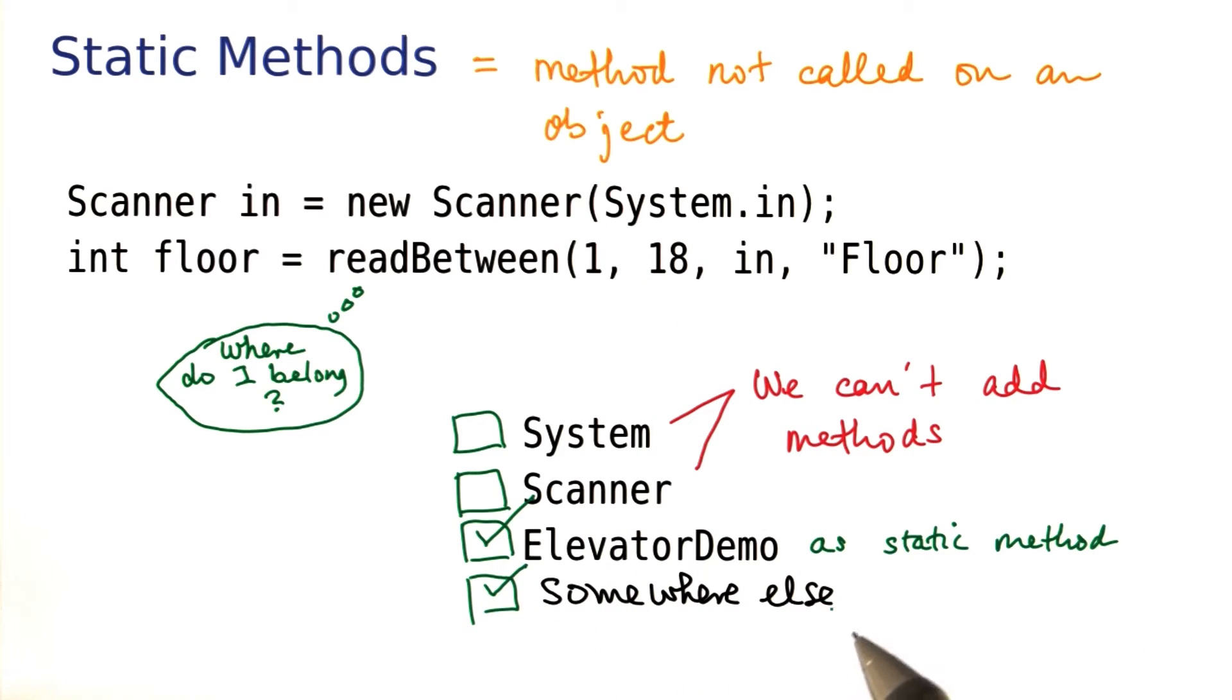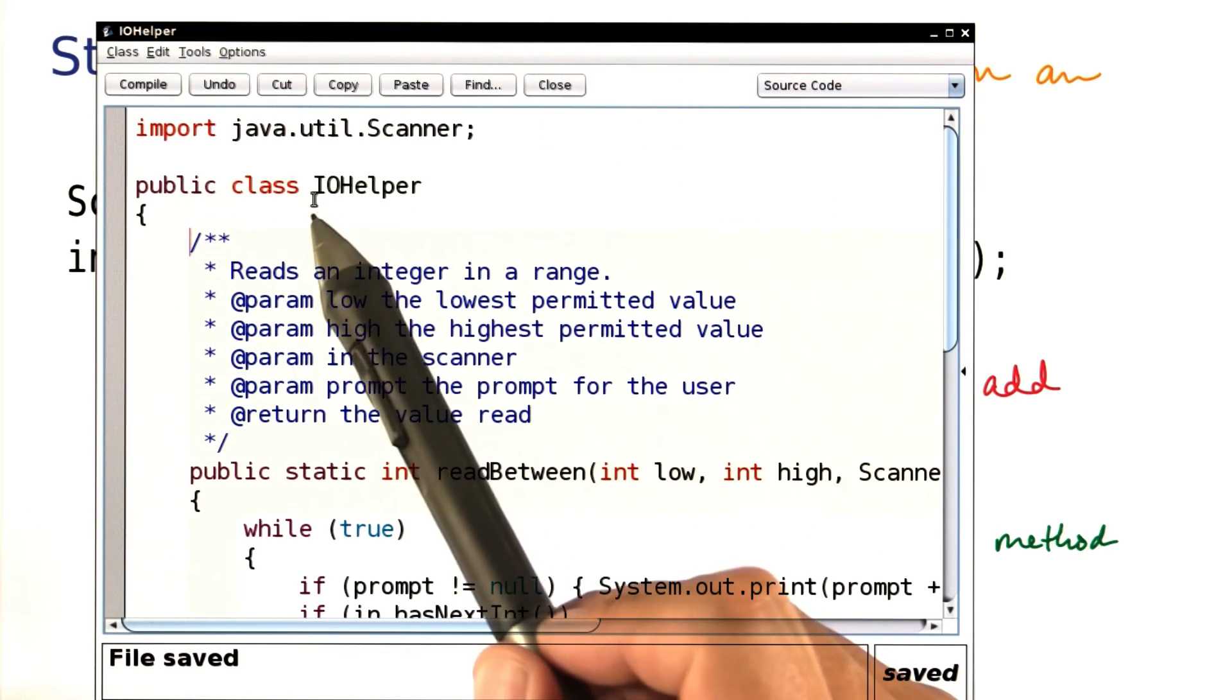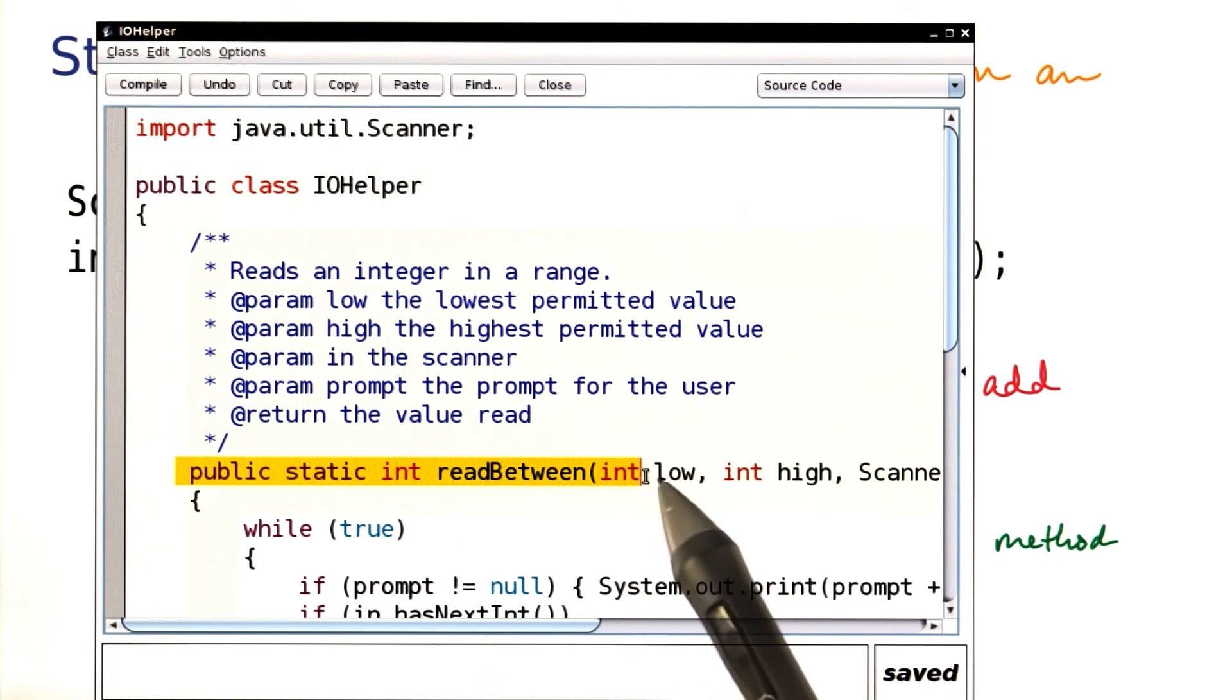And the class that I'm going to put it on, I'll call IO helper. I've prepared that class for you, let me show you. Here is the IO helper class. Here is the read between method.